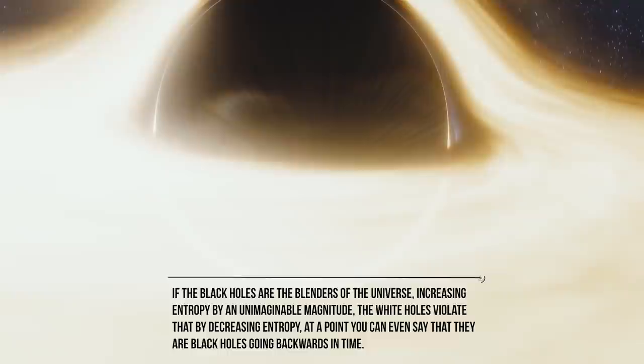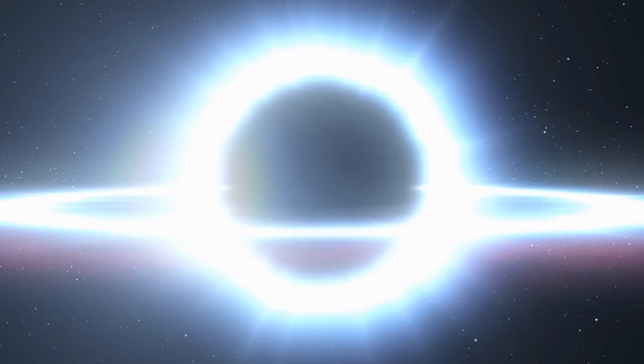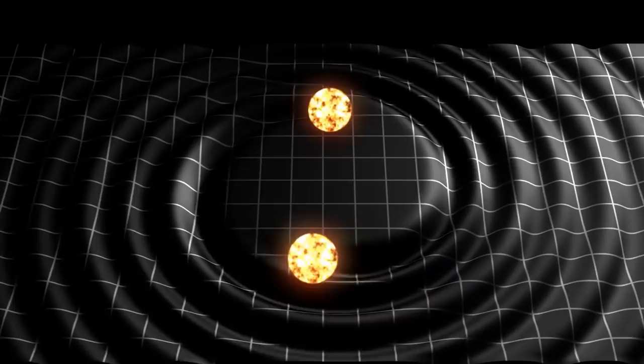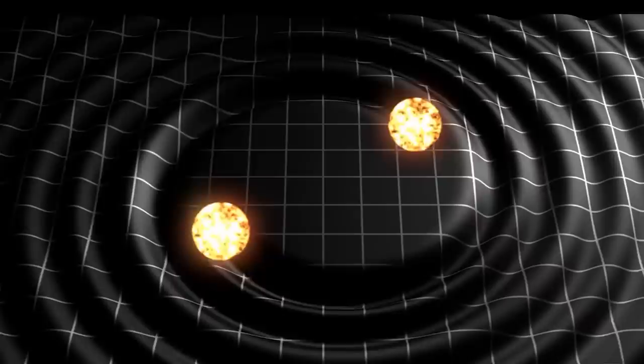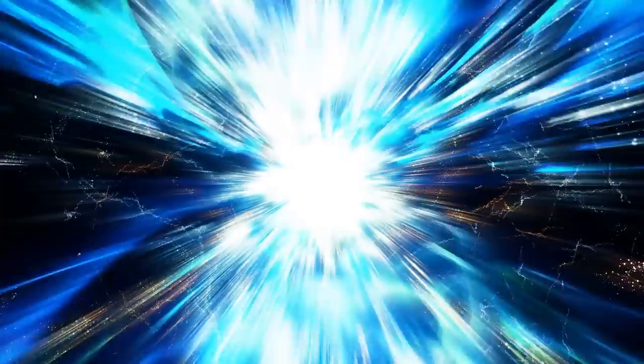Well, if black holes are the blenders of the universe, increasing entropy by an unimaginable magnitude, white holes violate that by decreasing entropy. At a point, you can even say that they are black holes going backwards in time. So the burning question in everybody's minds right now must be, are white holes actually going backwards in time? To someone who studies general relativity, the easy answer is a quick yes. In this field introduced by Albert Einstein, the idea that time is a standard and ultimate reference is abandoned. So if that's the case, it shouldn't be a problem to go opposite the direction it currently does. At least, theoretically speaking.